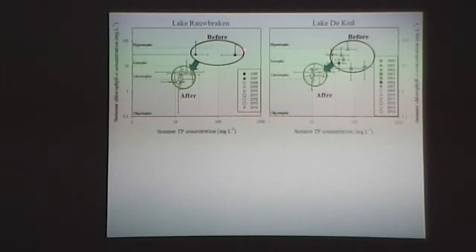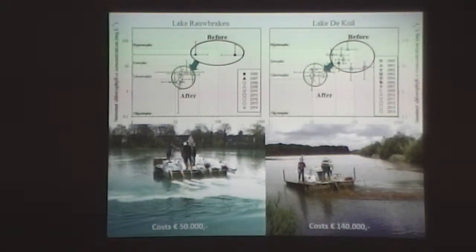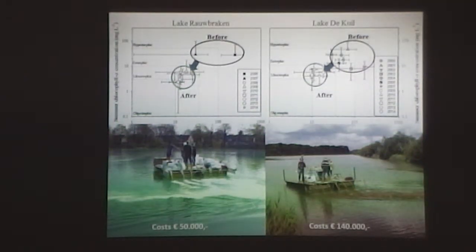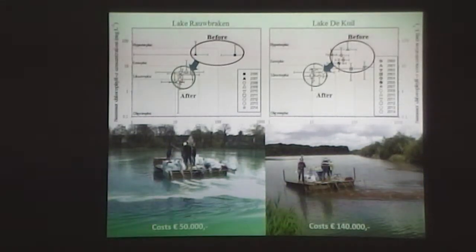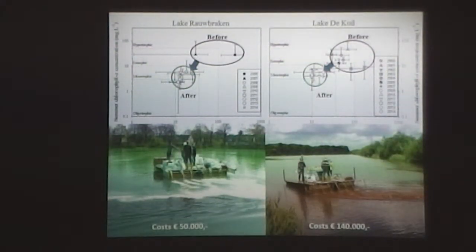To summarize the results of the whole-lake experiments: we moved both lakes from a eutrophic to a mesotrophic state. The costs of application were 50,000 euros and 140,000 euros. So 50,000 euros is virtually nothing compared to 150,000 euros loss of income in 2007. And if it's effective for eight years, that's about 7,000 euros per year — these are normal maintenance costs, easily covered in the maintenance budget.